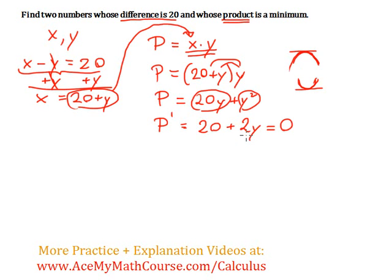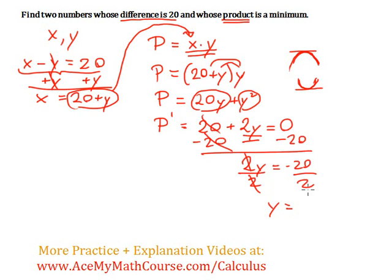So now we just need to solve for y. So 20 plus 2y equals 0. I can subtract 20 from both sides of the equation. 2y is equal to negative 20. Then I can divide both sides by 2. And y is equal to negative 20 divided by 2, which is negative 10.